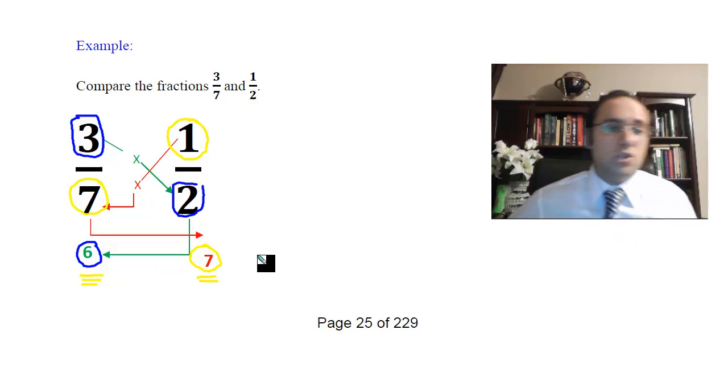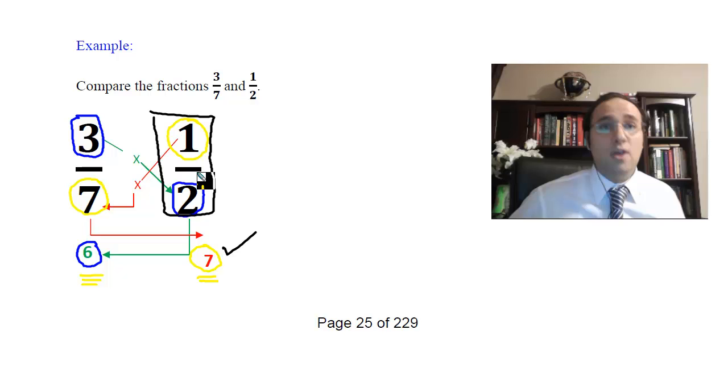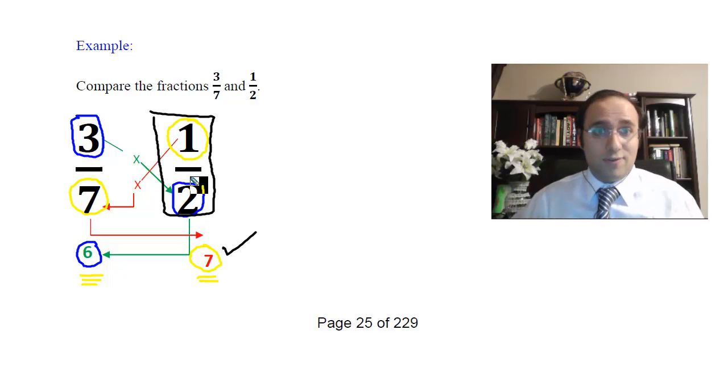Which is bigger, 7 or 6? 7 is bigger. Therefore, the fraction 1 over 2, 1 half, is bigger than the fraction 3 over 7.